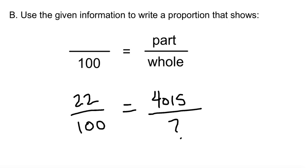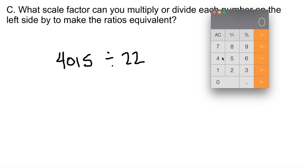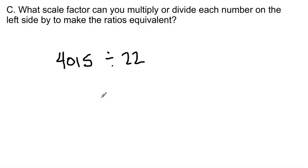All right, so let's take a look here. Now, what scale factor can you multiply or divide each number on the left side by to make the ratios equivalent? Scale factor. Well, we're given 4,015. So let's take out the handy-dandy calculator over here. All right, so 4,015 divided by 22 equals 182.5. So this is your scale factor. How do you get the scale factor? By dividing what we were given by its percentage.